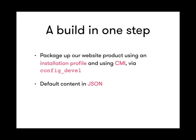Importantly, if you want to build in one step, you need some default content — you want to have a good start for any website. So we store our default content in JSON using the Default Content module, which is really great — it basically serializes your nodes, paragraph types, and blocks in JSON.